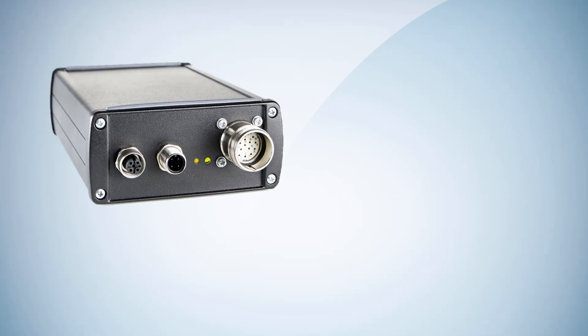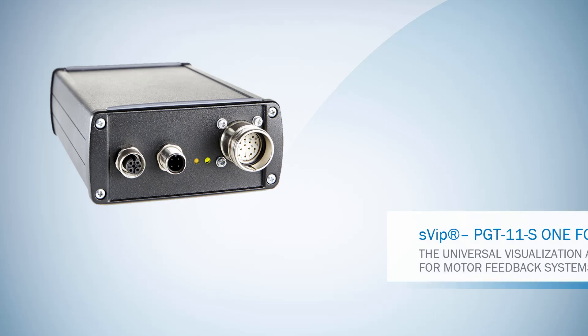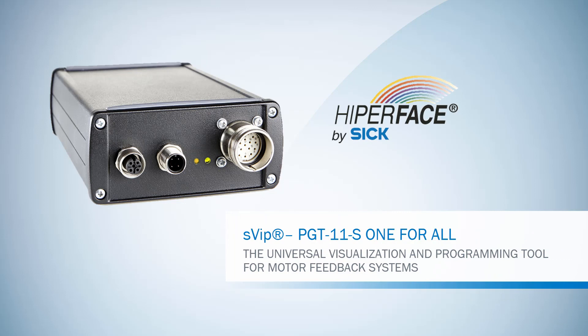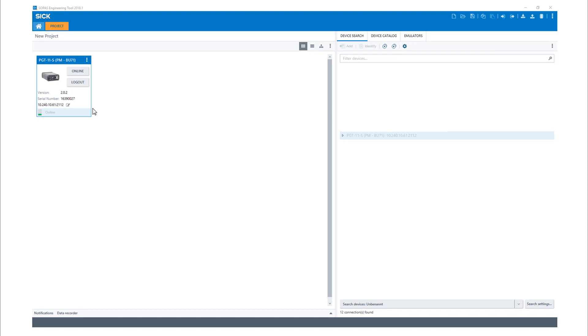Welcome to this tutorial on how to use your programming tool PGT11S in hyperphase mode. First of all, you have to ensure that SOPAS is installed on your computer and the PGT is connected. If you open SOPAS, the following window appears.